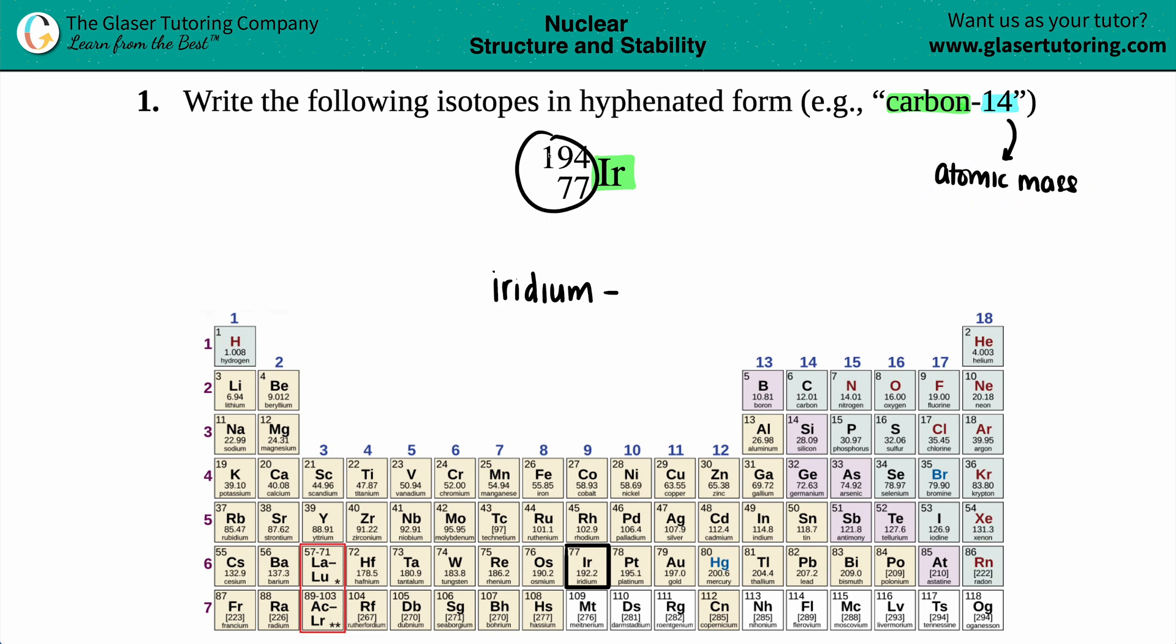But we are given two numbers here, 194 and 77. Which one is the mass? Which one's the atomic mass? You're absolutely correct, it's the one on the top, the 194. The bigger number, if they give you two numbers, is always going to be the atomic mass.